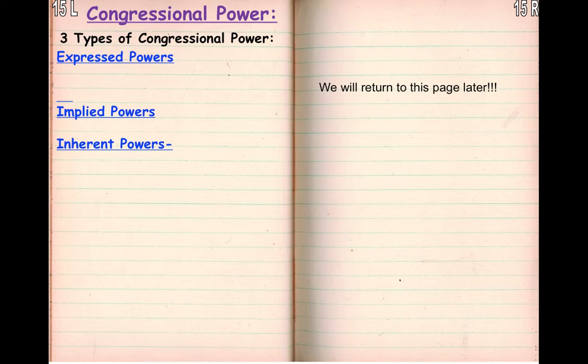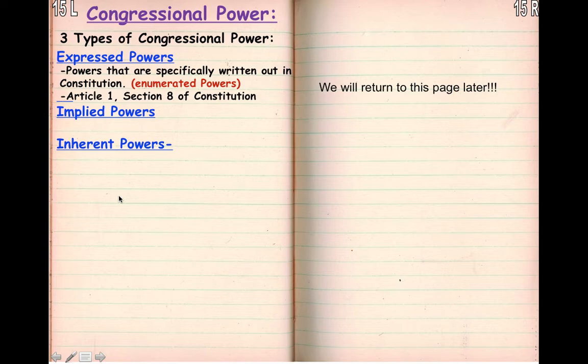On 15R, you see that it says we will return to this page later. It just makes a little bit more sense to explain these three powers, go through the expressed and some implied — don't worry, we will not go through all of them, that's too many to even count — and then we'll come back to the information on this page. So first, expressed powers are powers that are explicitly written out in the Constitution. They're also called enumerated powers — they are literally numbered.